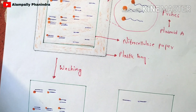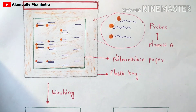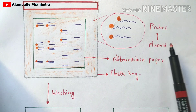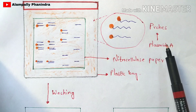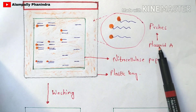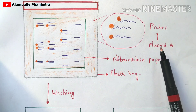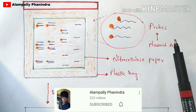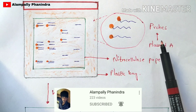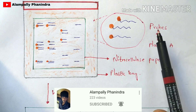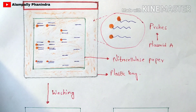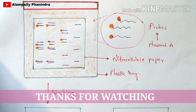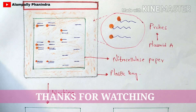One important point to remember: here you added probes related to plasmid A, but it depends on your interest. If you want to know about sequences related to plasmid B, add probes related to plasmid B. If you want to know about the specific sequence of plasmid C, extract probes related to plasmid C or plasmid D. This is the complete process of the Southern blotting technique.